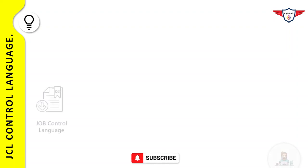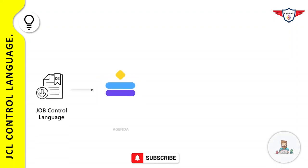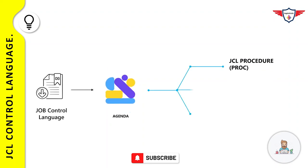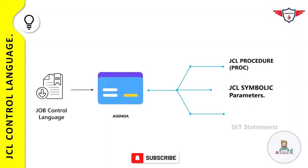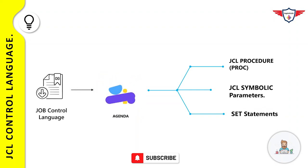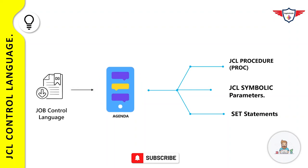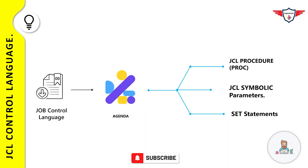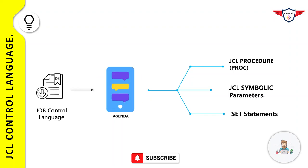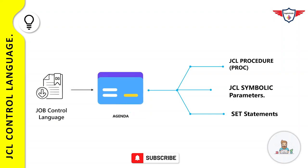Welcome back to the session. In this session we'll cover three important topics: first, JCL procedures or PROC, in which we'll talk about catalog and in-stream procedures; second, symbolic parameters and how you can use them to write catalog or in-stream procedures; and third, how to use the SET statement to assign values to symbolic parameters and how you can override them in your catalog or in-stream procedures.